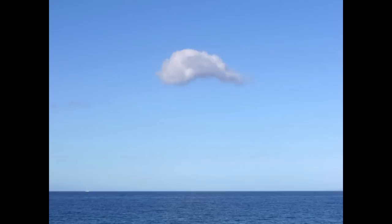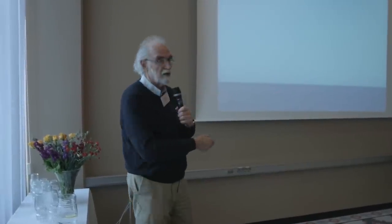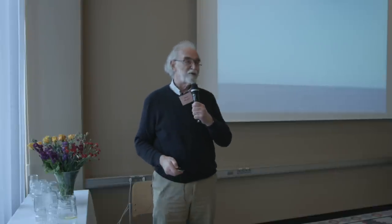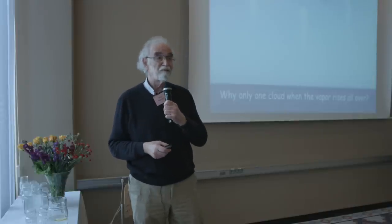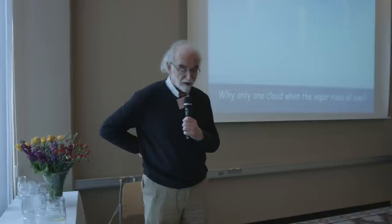So this is something you see all the time. You see a cloud, and sometimes if you have a vast array of water, you see only one cloud just above — and the question is, how come you see only one cloud when the water is evaporating all over? You don't always see one cloud, but you see it often enough. Maybe you've never thought about this particular aspect of water.